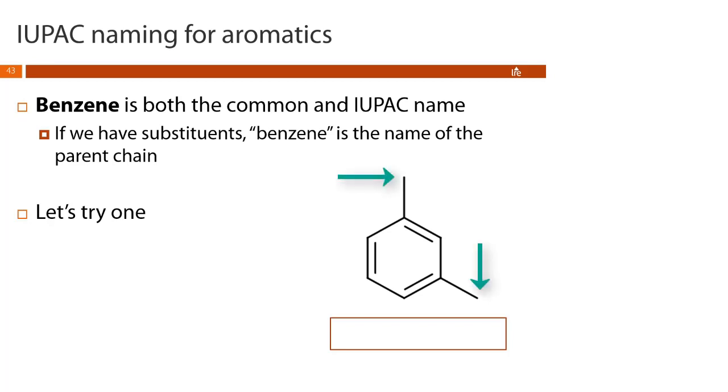Okay, so we have two methyl groups and we want to number our chain so that they get the lowest possible numbers. So we can number it one, two, three, four, five, six. So that means the correct IUPAC name for this molecule is 1,3-dimethylbenzene.